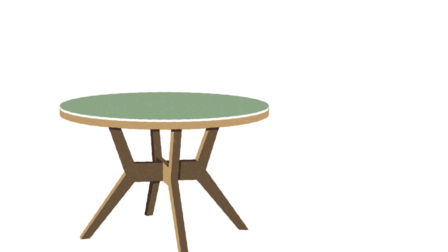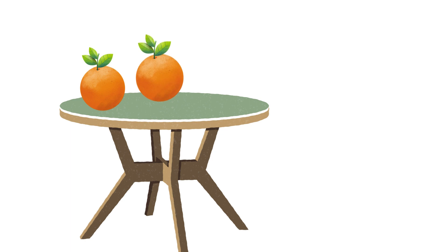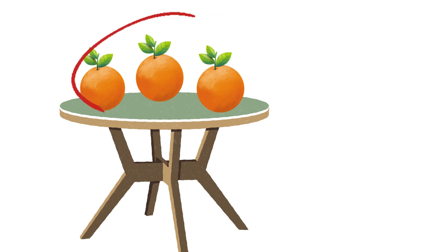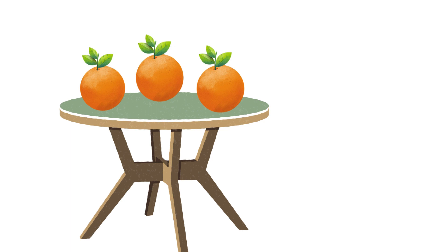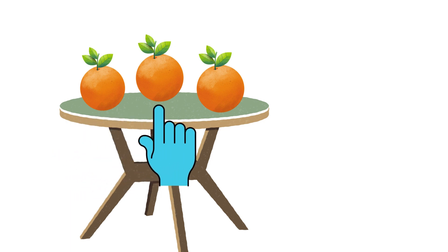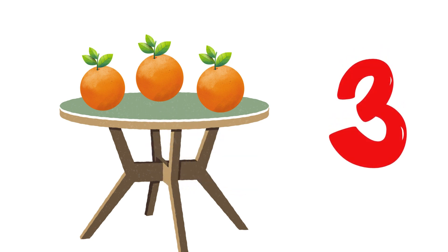Now, look at this table. I am putting one orange and now another one and one more. How many oranges are there on the table? Let's count: one, two, three. There are three oranges on the table.